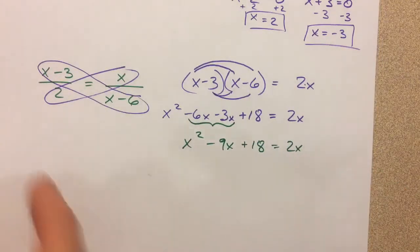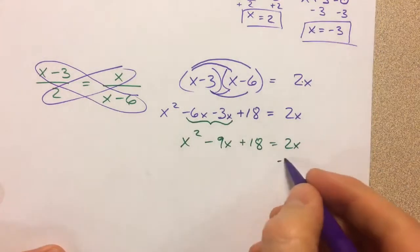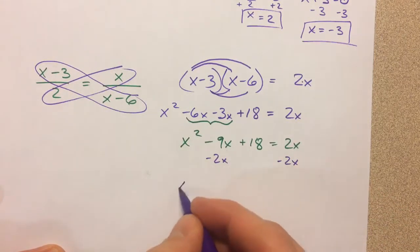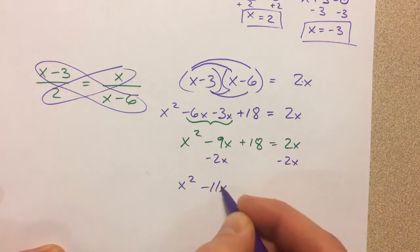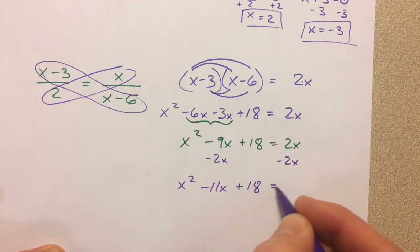And then I need to move, just like I did on the last one, I want to set it equal to 0. So I get x squared minus 11x plus 18 equals 0.